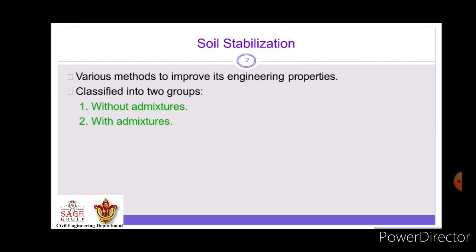There are various methods to improve the engineering properties of soil, which have been classified into two groups. The first is without admixture, and the second is with admixture.